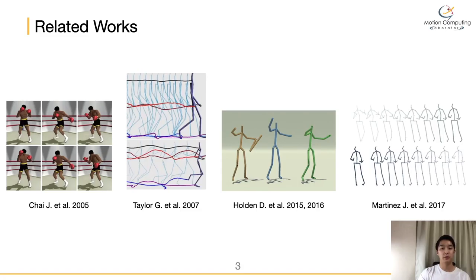Researchers have developed similar methods to construct a motion manifold to generate natural human motions. CHI applied local PCA to produce a motion manifold that includes a certain range of human motion, and applied it for synthesizing movements from low-dimensional inputs such as position and ND vectors. Taylor proposed a modified restricted approach on motion that is able to deal with the temporal coherence of motion data.